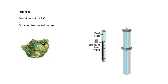The fuel rods contain uranium-235, which is our fissile material. It's extracted from uranium ore dug out of the ground. There are many isotopes of uranium, so a centrifuge is used to separate the uranium-235 — this process is called enrichment. The enriched material is then put into fuel rods, which go into an assembly that goes into the reactor.